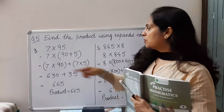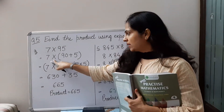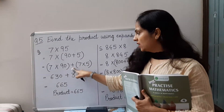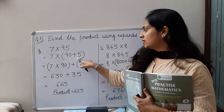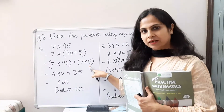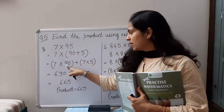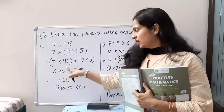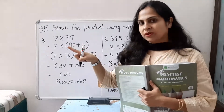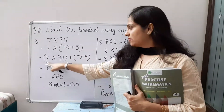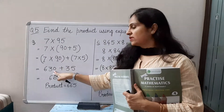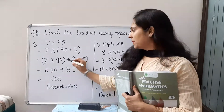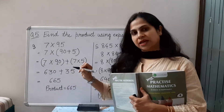Our next step will be: we will multiply 7 by 90, put them in one bracket with a plus sign in the middle, and multiply 7 again with 5. So 7 nines are 63, and one zero is there, so we write 630. Plus 7 fives are 35.